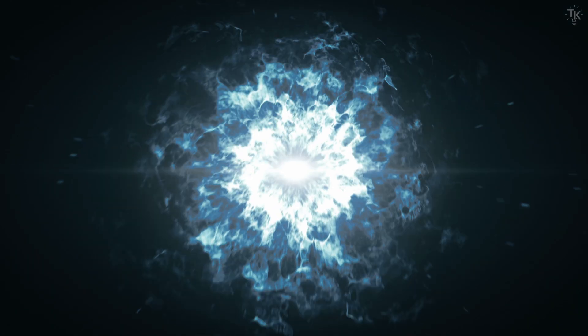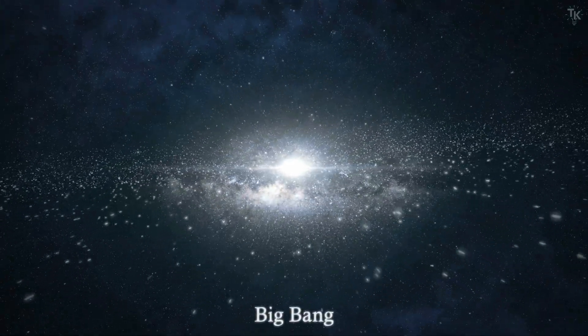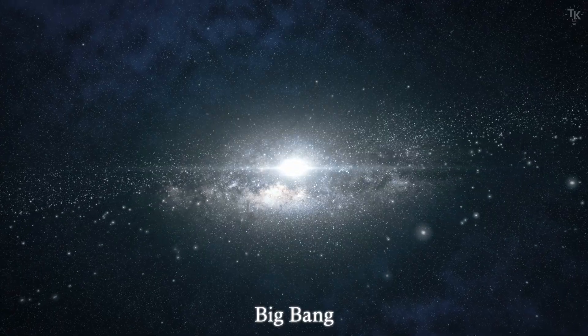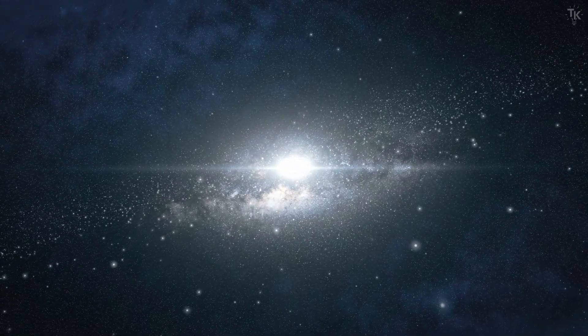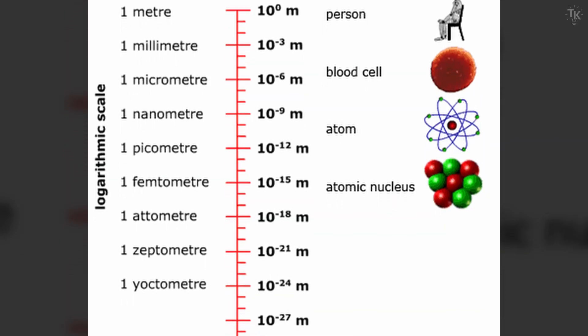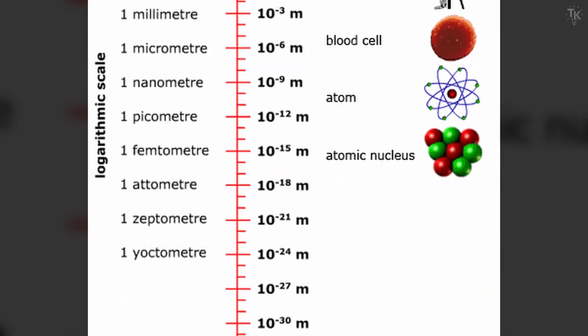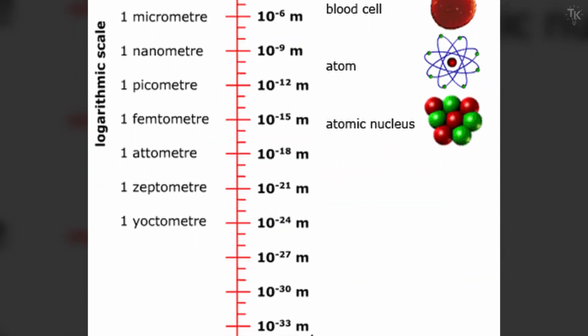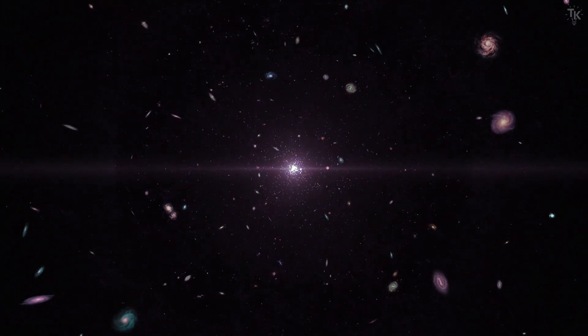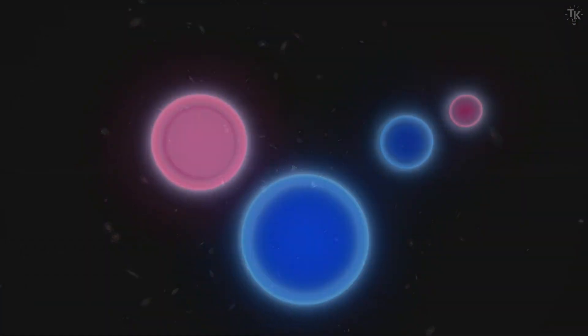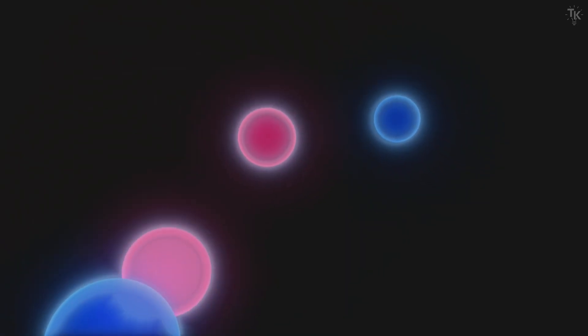The universe was born 13.8 billion years ago. It began from a state of infinite density. This was the Big Bang. Immediately after its birth, the size of the observable universe was at the scale of the Planck length. The universe was unimaginably dense, but quantum fluctuations already existed there.